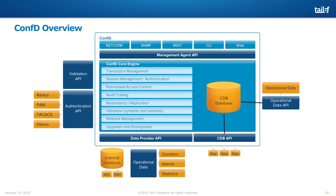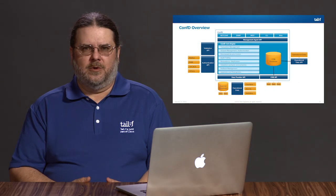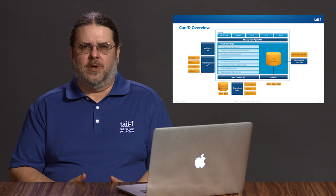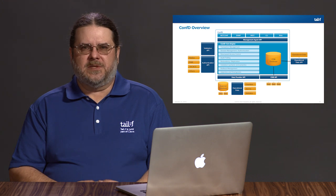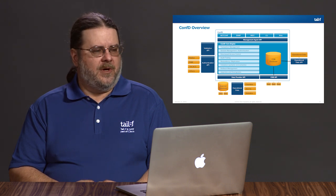Once you've authenticated into the system and allowed someone in, you want to be able to control what they can do through the authorization system. For authorization in ConfD, we implement role-based access control. When a user accesses the system, that user is assigned to a role, and the authorization system provides access control based on which roles they are associated with. You can think of a role as being like a Unix group.